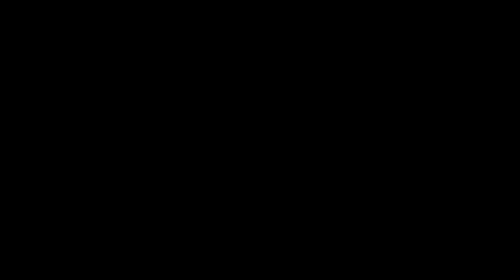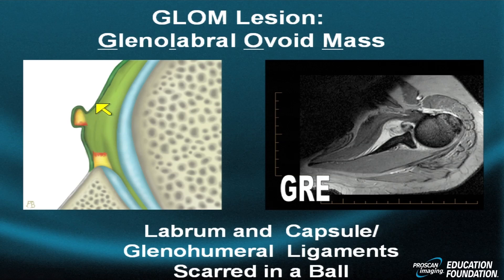Then we have the GLOM lesion. My father used to call people on the highway a GLOM when he was driving his truck, and a fight never ensued because the other person never knew what a GLOM was — it had a negative connotation. It has a negative connotation on MR as well. It stands for a glenolabral ovoid mass — the mass consisting of labral tissue surrounded by capsule, along with some frayed rounded capsule. The diagram shows the labrum in yellow with the surrounding capsule wrapped around it in a ball.